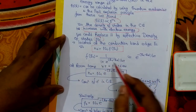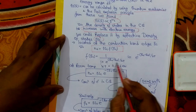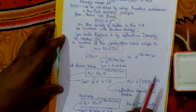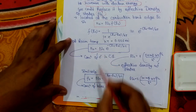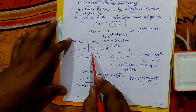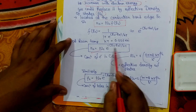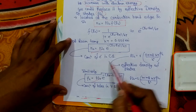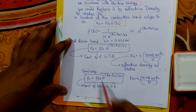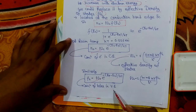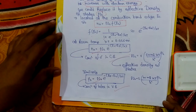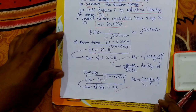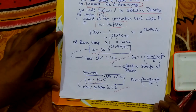F(EC) = 1 / (1 + e^((EC − EF) / kT)). Overall, the electron concentration is: n₀ = NC · e^(−(EC − EF) / kT) in the conduction band, and the hole concentration is: p₀ = NV · e^(−(EF − EV) / kT) in the valence band. We will cover more topics in the next videos — please subscribe to this channel. Thank you.